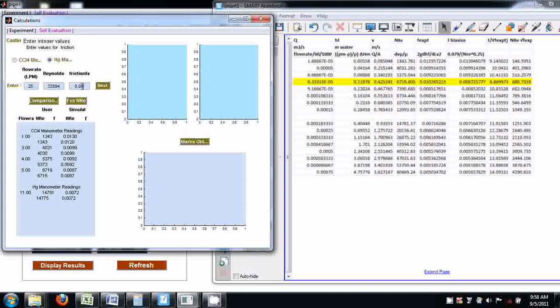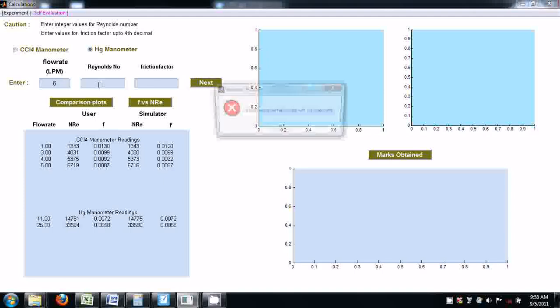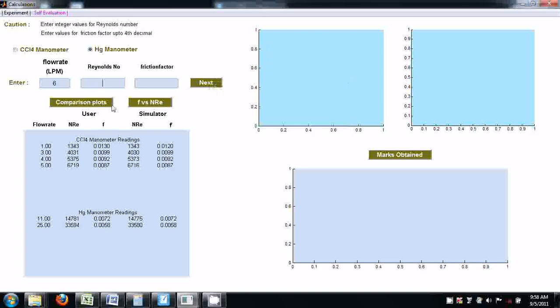33594, and its friction factor is 0.0058. Enter next. This checking can be done for all the readings. If you enter any flow rate with which you have not done an experiment, it gives an error: not an experimental flow rate with HG manometer.